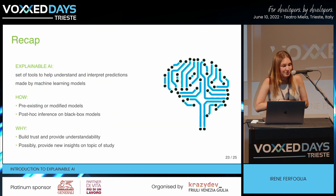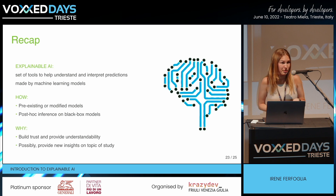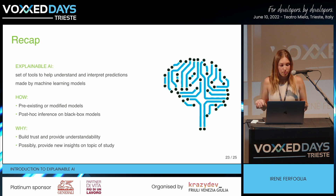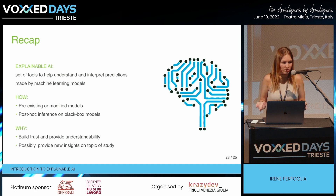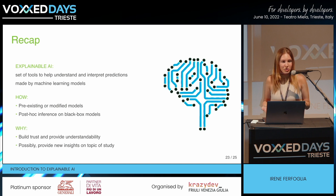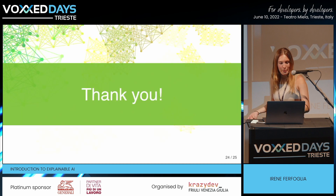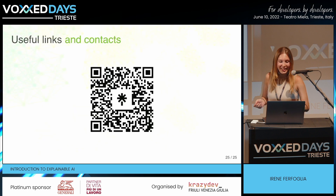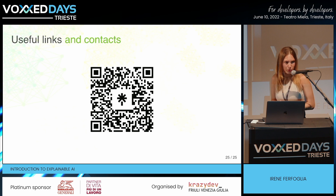To recap what we saw: explainable artificial intelligence is a set of tools and frameworks that help understand and interpret predictions made by machine learning models. This can be accomplished through pre-existing or adequately modified models, or through post-hoc inference on black box models. All this work can be carried out in order to build trust and provide elucidations on what otherwise would be black box systems. As a nice addition, as we saw with ECGs, with explainable AI we can also get new insights into the topic of study. Thank you for your attention. I hope you enjoyed it and that this has somehow inspired you to dive deeper into this very new topic of research.